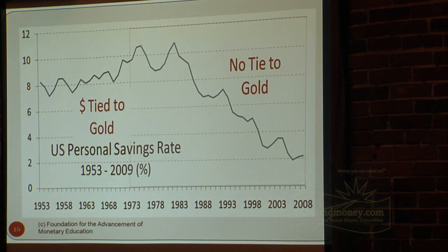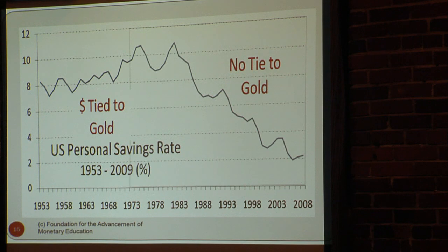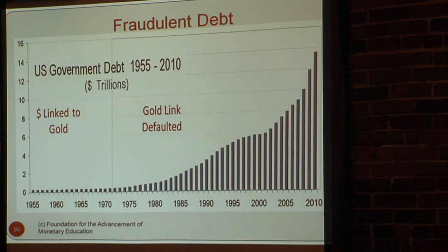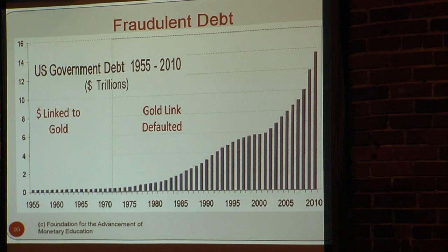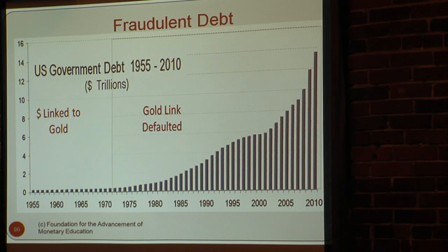One of the really big negatives is that since you can create money out of nothing, the federal government has entered into all kinds of increased debt. Up until 1971 the debt levels in this country were relatively small, but after the last tie to gold was broken, the debt increased enormously. Right now the book debt is something like 14 trillion dollars, not counting the additional six trillion dollars the government took over with Fannie Mae and Freddie Mac. I call this fraudulent debt because it is being entered into without the ability to ever repay it.